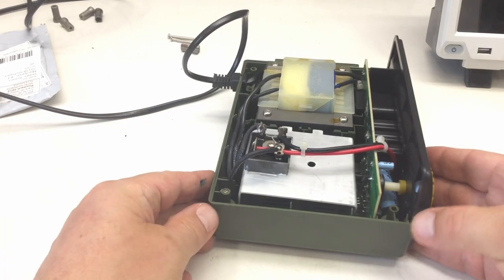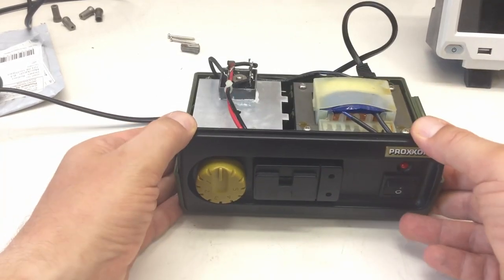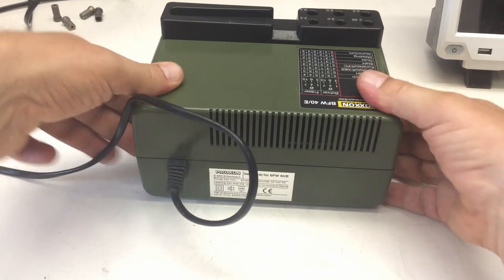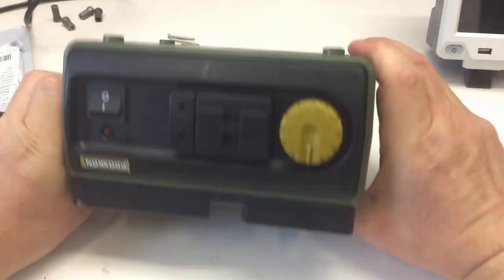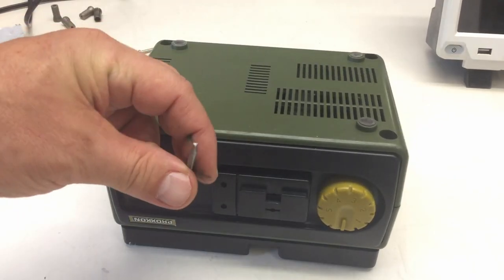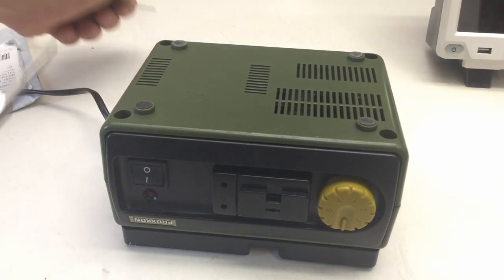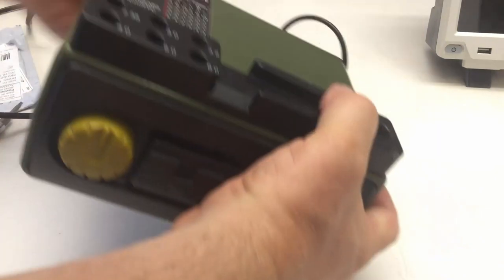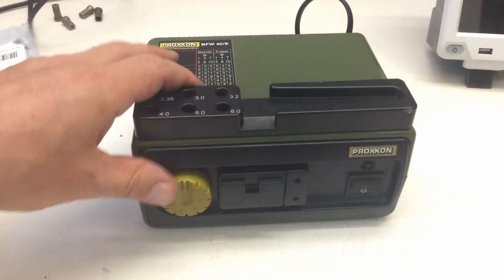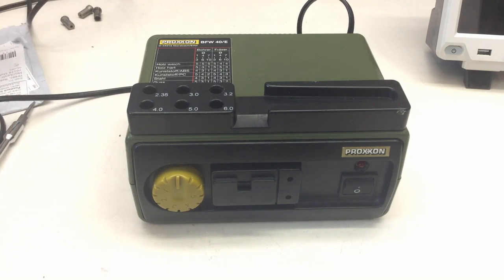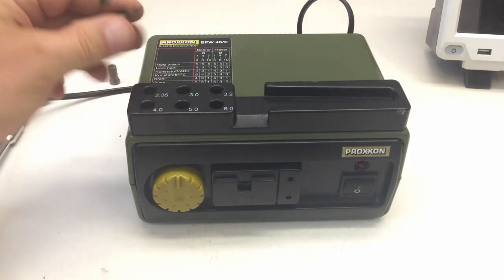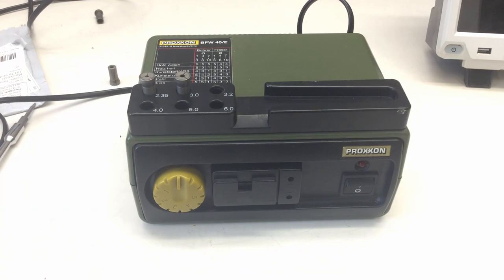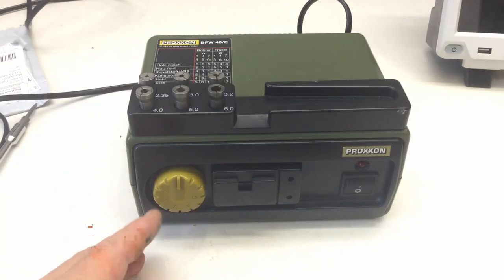And now we have to screw on the cover again, the right way around. The triangle security bit. Hopefully the right one. And that's it. Well, almost. I could put my collets here back in again in the right order. That's it.